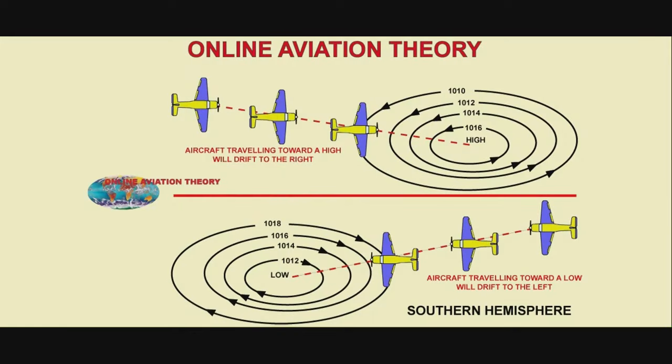In the Southern Hemisphere, the flow of air is anti-clockwise around a high-pressure system and clockwise around a low.